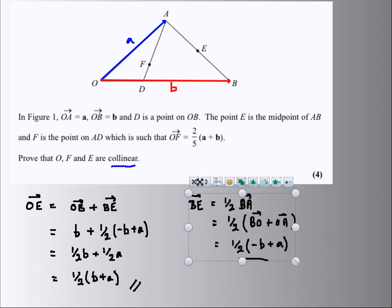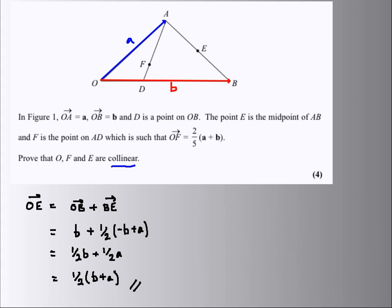Now, collinearity. How do I show it? OF, I'm told, is two-fifths of a plus b.